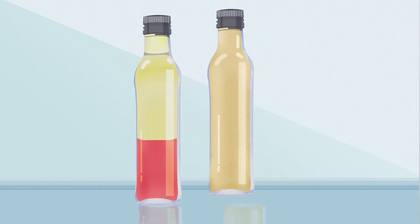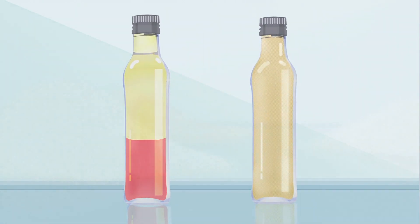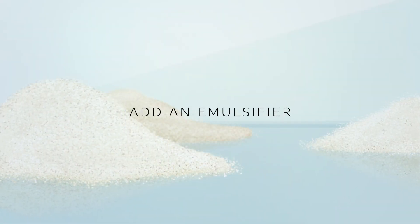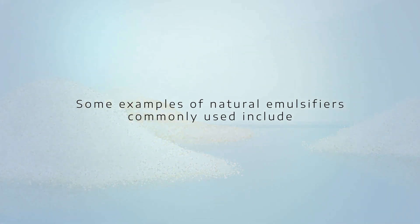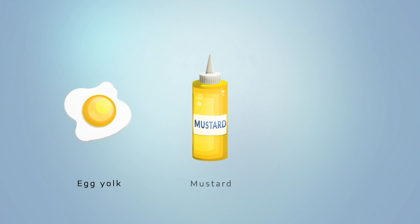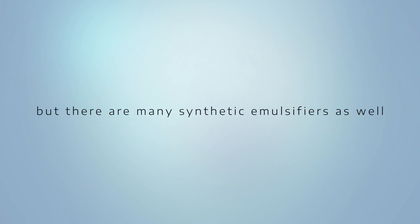To prevent that from happening and make a stable emulsion, you need to add an emulsifier. Some examples of natural emulsifiers commonly used include egg yolk, mustard, and soy lecithin. But there are many synthetic emulsifiers as well.